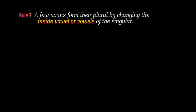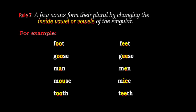Rule number 7: A few nouns form their plural by changing the inside vowel or vowels of the singular. For example, foot changes to feet, goose changes to geese, man changes to men, mouse changes to mice, tooth changes to teeth. Here, the inside vowels are changed to make the plural form.